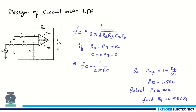The second order low pass filter consists of two pairs of RC networks. This is one RC network and this is the other, represented as R2, R3 and C2, C3. This makes the second order low pass filter, and this is the op-amp acting as a non-inverting operational amplifier, which gives the gain.